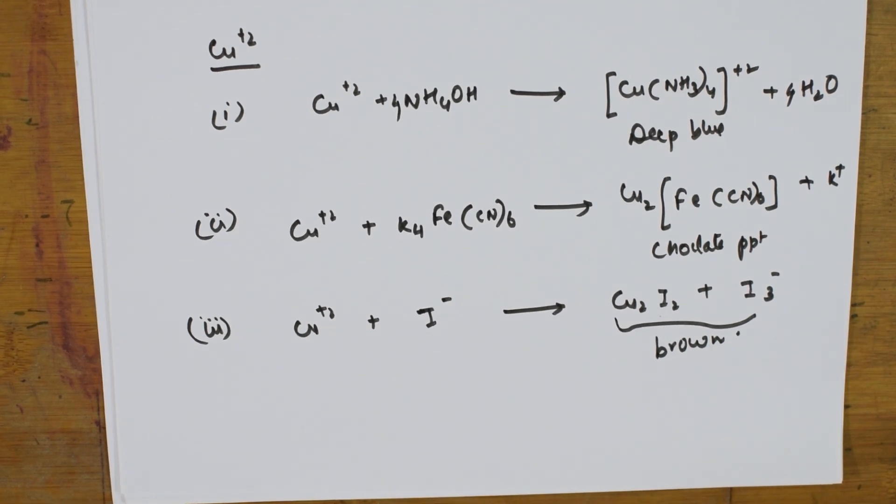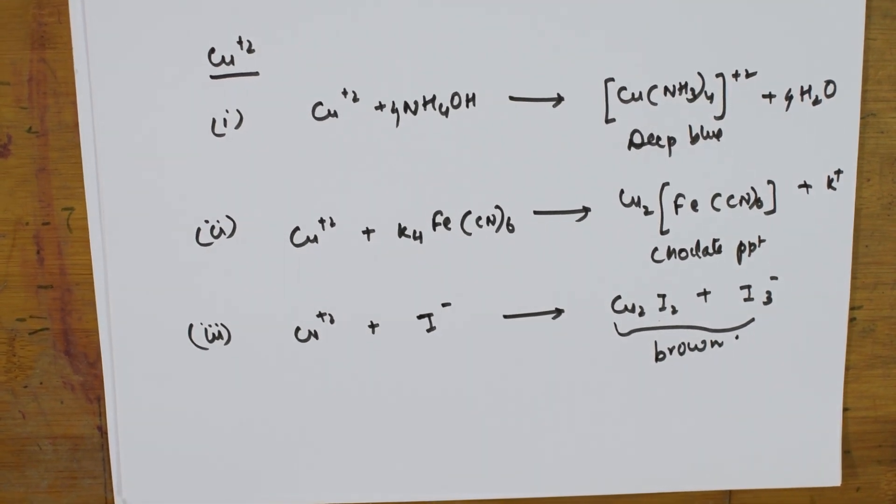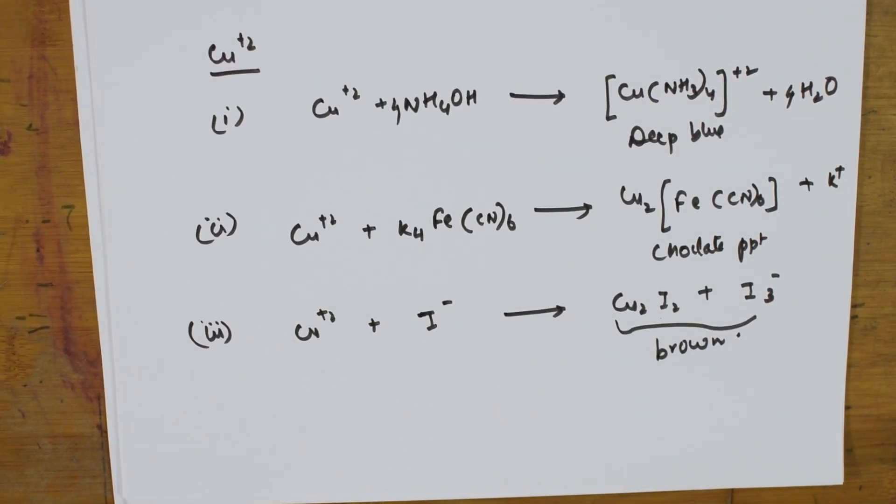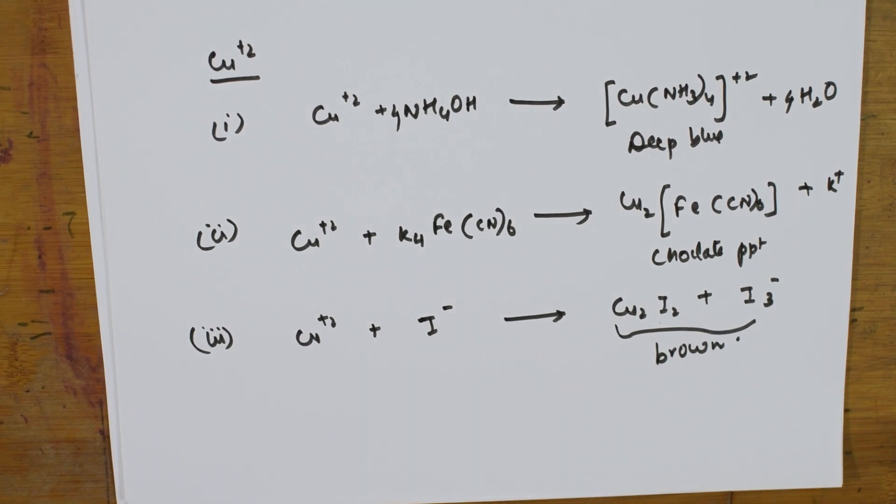These are the different tests for copper students. We have seen the test for mercury, the test for lead, the test for copper. I will meet you again with the next flowchart, that is for Group 3 radicals. Thank you for watching.